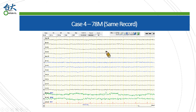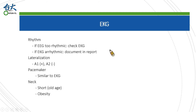This case is interesting because in the later data epochs the EKG artifact disappears. If you look more closely at the EKG trace, the morphology is also different. When we talk about EKG artifacts, we can identify them if they are too rhythmic. If we notice a rhythmic EKG artifact, it is better to document it in the notes to inform the primary physician.